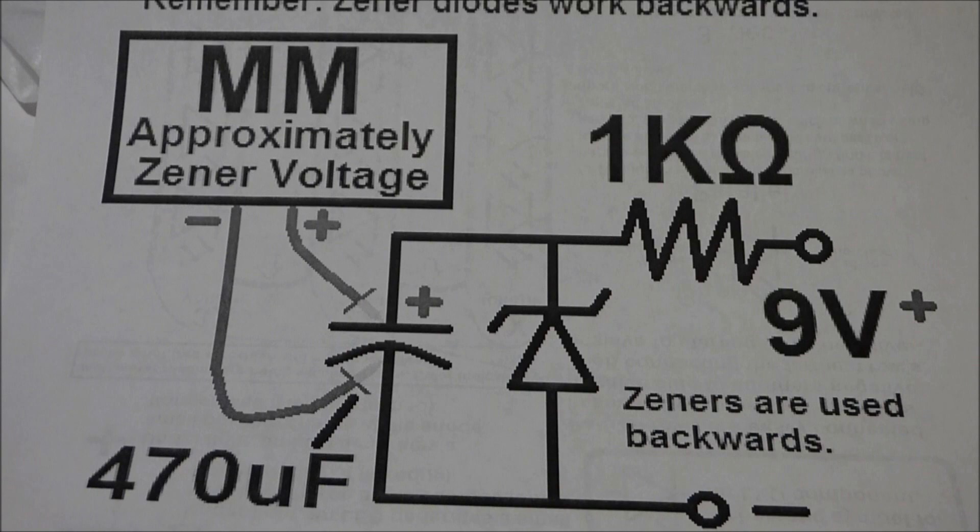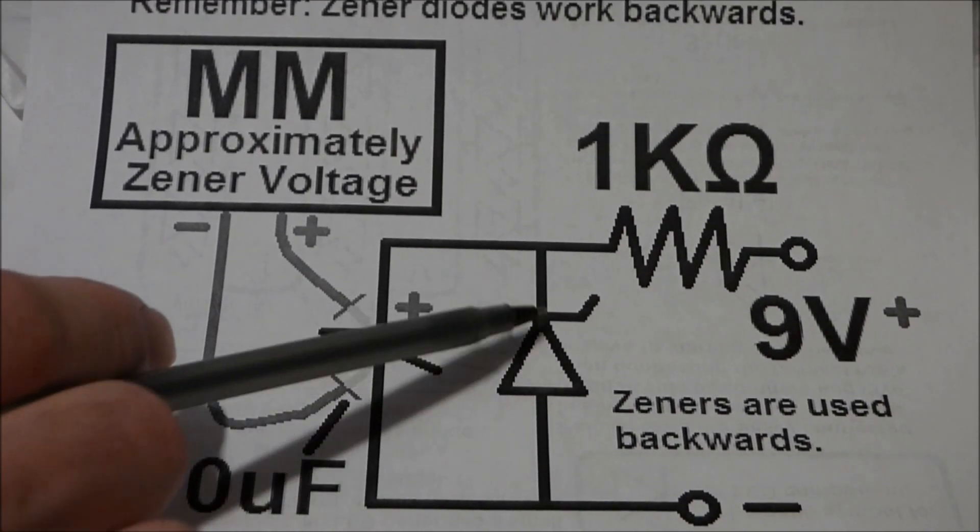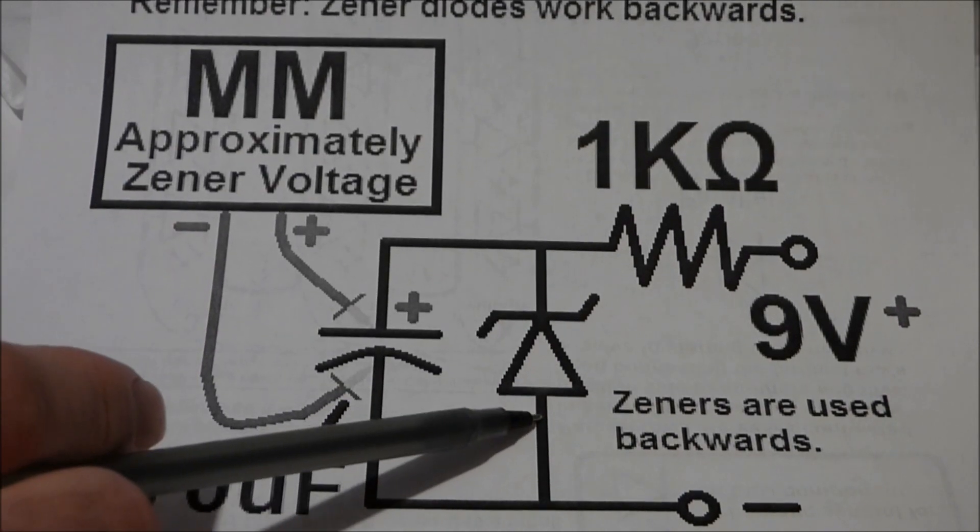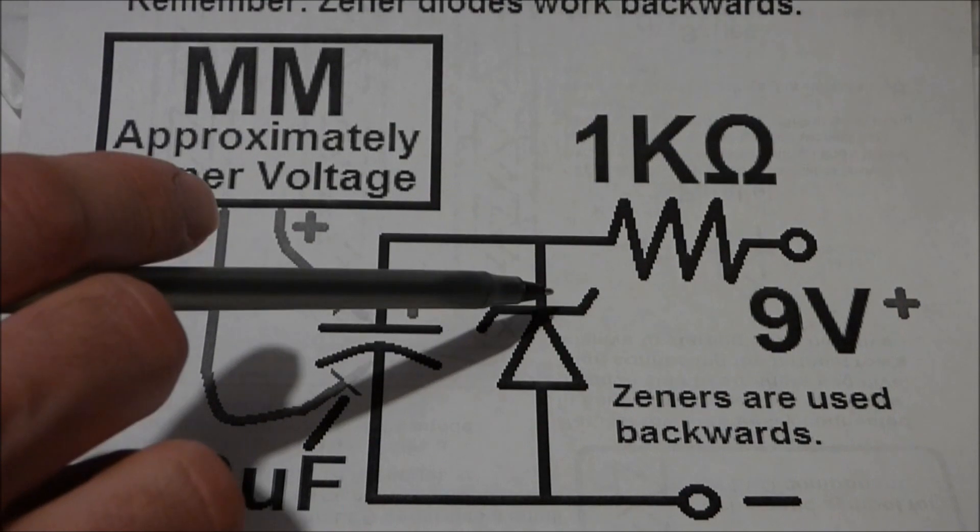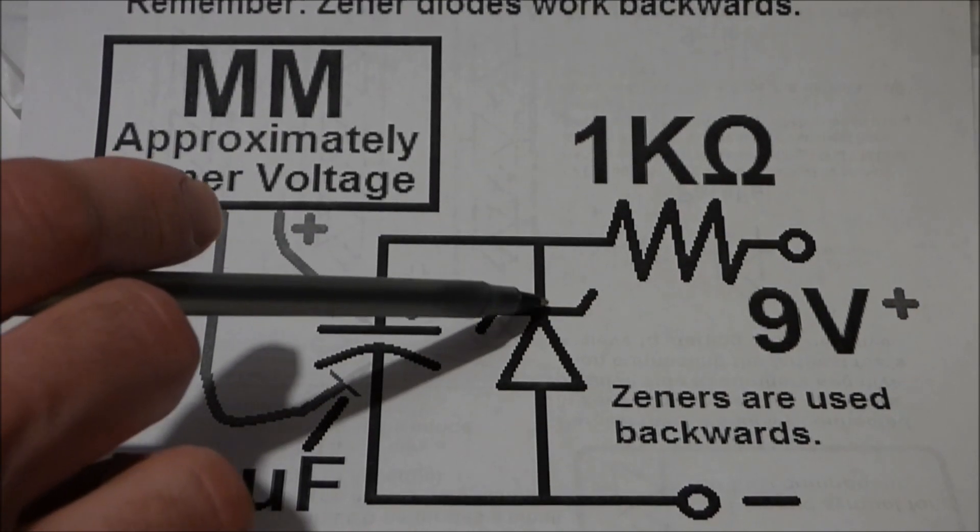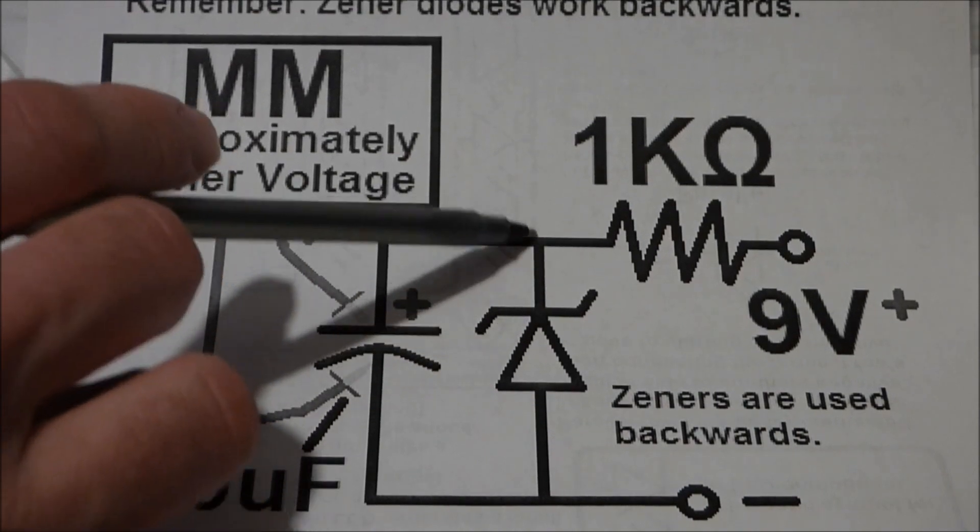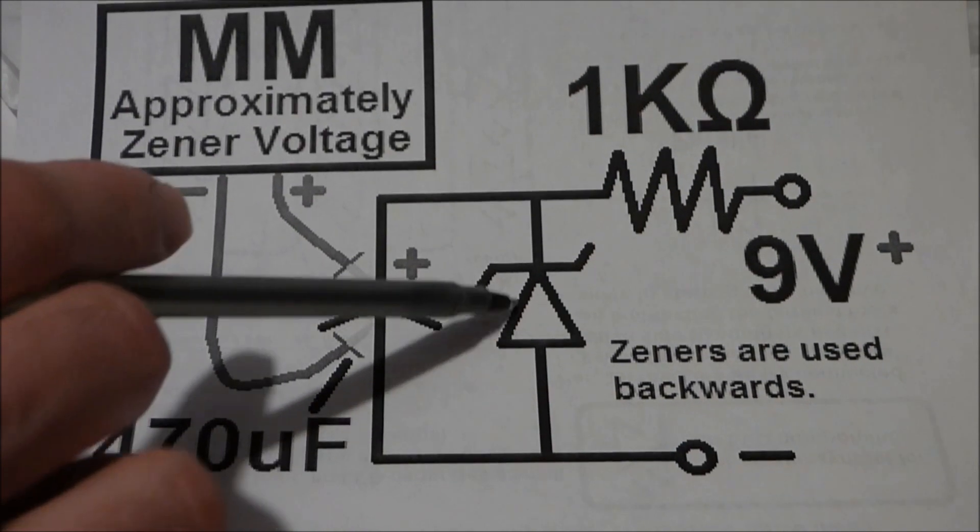But it's made to resist that voltage only to a certain point, and then once you hit that point it's made to let it go through. That's why they're used in circuits when you want it to go through.